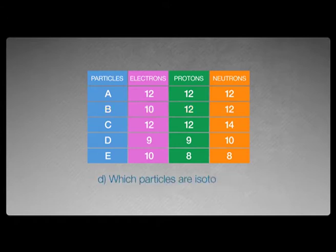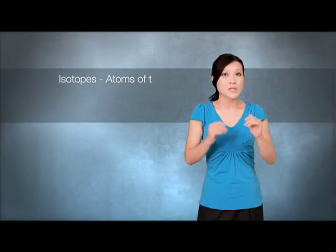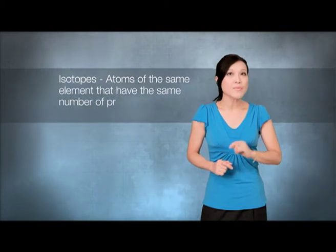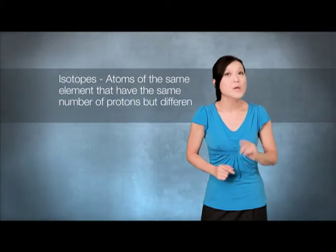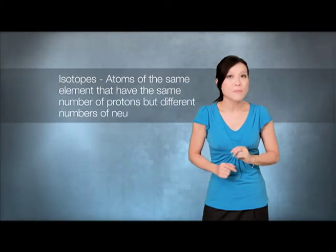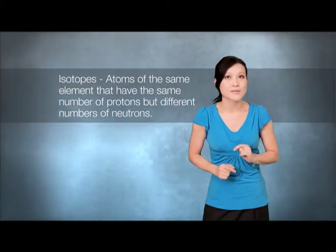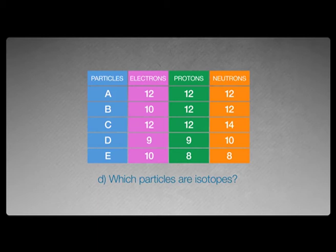Question D: which particles are isotopes? And what are isotopes? Atoms are the same element that have the same number of protons but a different number of neutrons. So particle A and C is your answer.